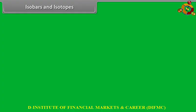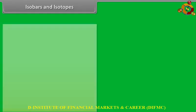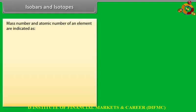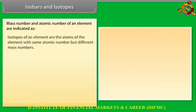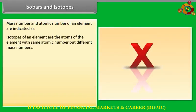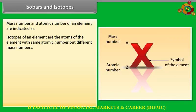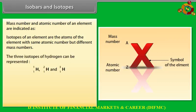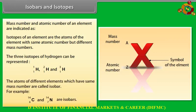Isobars and isotopes: Isotopes of an element are atoms with the same atomic number but different mass numbers — for example, the three isotopes of hydrogen. Atoms of different elements that have the same mass number are called isobars.